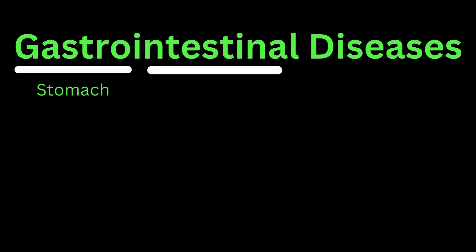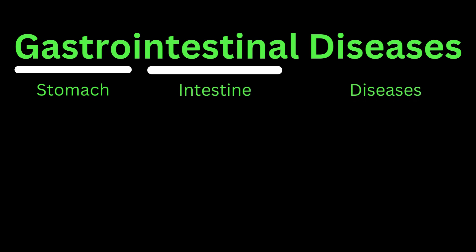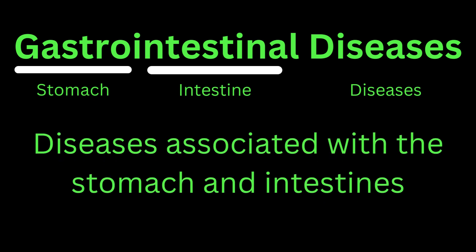Next, let's look at gastrointestinal diseases. This word can be broken down into three parts: gastro referring to stomach, intestinal referring to the intestines, and disease remains as diseases. Hence, gastrointestinal diseases are diseases that are associated with the stomach and the intestine.